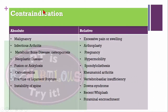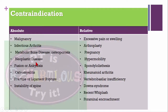Let's look at contraindications, because if we are going to learn spinal mobilization we have to be careful. Contraindications may be absolute or relative. Absolute contraindications include malignancy, infectious arthritis, metabolic bone diseases like osteoporosis, neoplastic disease, fusion or ankylosis, and osteomyelitis.